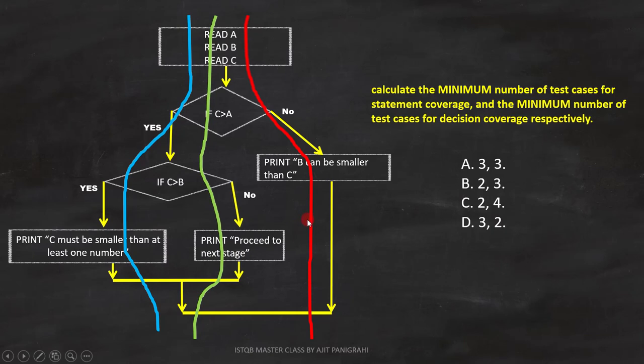Now we can also see that true and false path of all the decisions are also covered. So we need three test cases to cover the decision coverage. Therefore, answer is A.